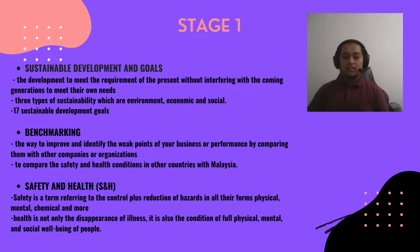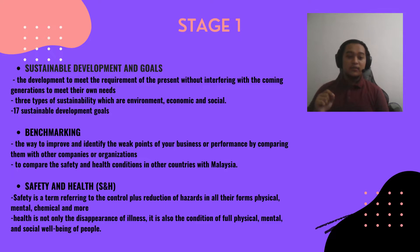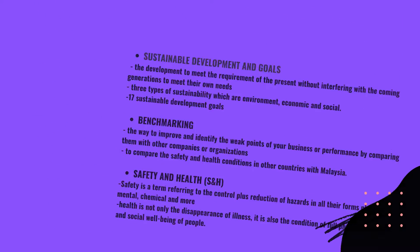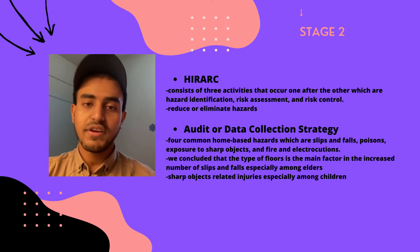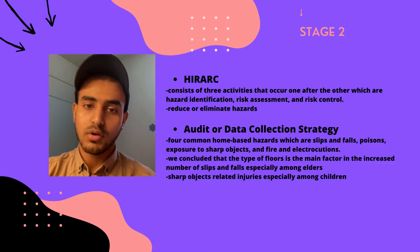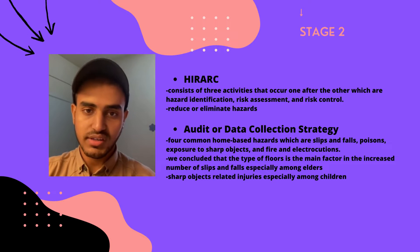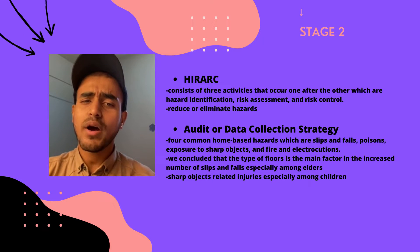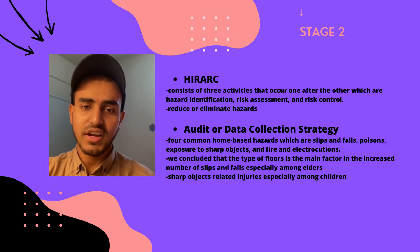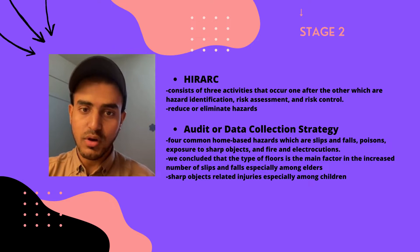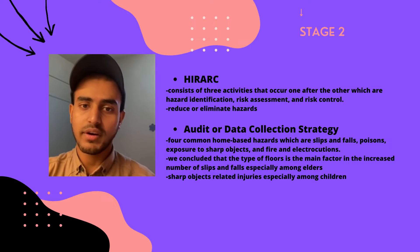And lastly is Safety and Health. Safety is the term referring to the control and reduction of hazards in all their forms. Health is not only the disappearance of illness; it is also the condition of physical, mental, and social well-being of people. This consists of two main parts: the first one is the HIRARC table, whereas the second one is the data collection strategies. The first one is a compound word consisting of hazard identification, risk assessment, and risk control. Its main function is to either reduce or eliminate the hazards from our life.